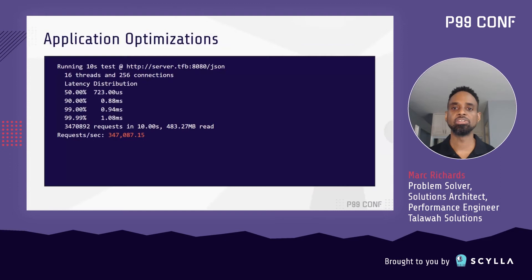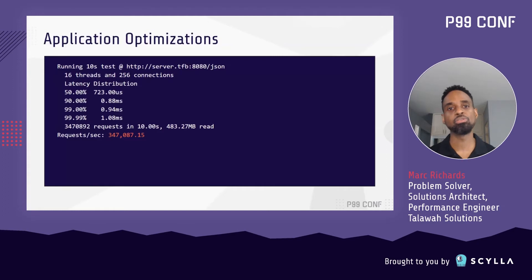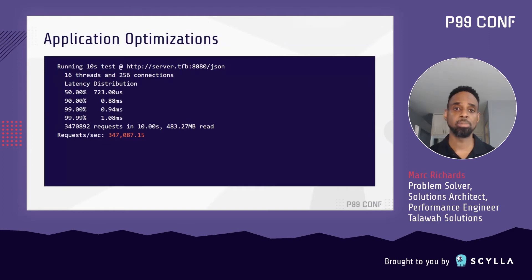Altogether, this gives us a performance boost of around 55%, and our throughput moves from 224,000 requests per second to 347,000 requests per second, which is pretty big for our first step.